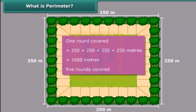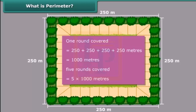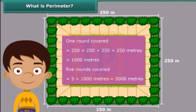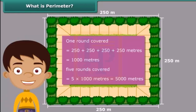Therefore, in 5 rounds, you covered 5 into 1000 meters — that is 5000 meters, or 5 kilometers. Now you are ready to answer your mother's question. In this calculation, we used the concept of perimeter when we worked out the distance you covered in one round.